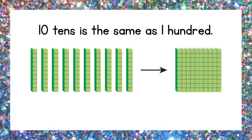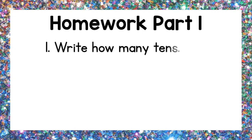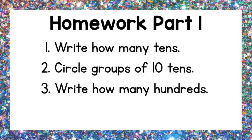To start, we must remember that 10 tens is the same as 100. Let's count the sticks to make sure — there are 10. Yep, there are 10, and together it makes 100. So here's the first part of what we have to do: we have to write how many tens there are, circle groups of 10 tens, write how many hundreds, and write the number.